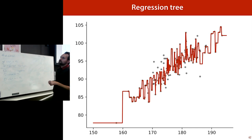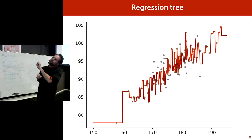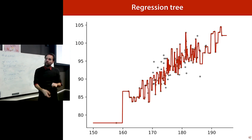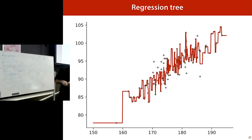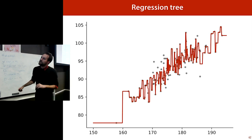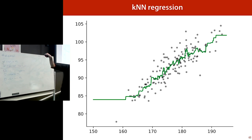Finally, the k-nearest neighbor regression: for a particular point, you take the average of the nearest seven training points in the feature space. The resulting predictions form a smoothed curve that follows the data closely but remains somewhat noisy depending on the choice of k.